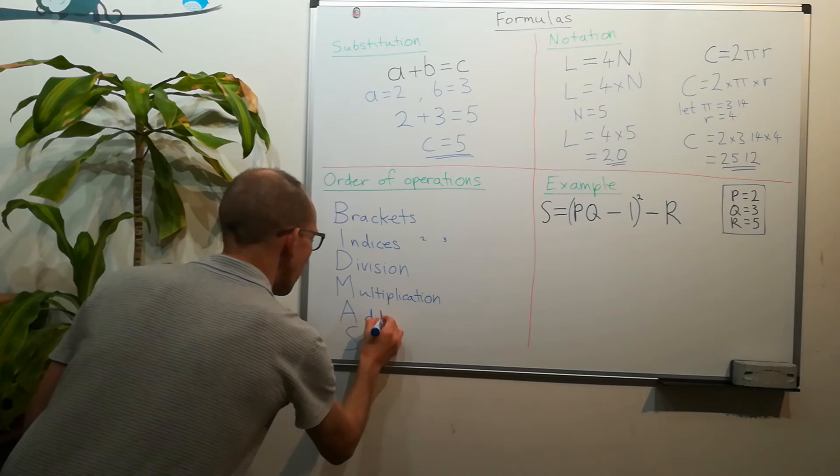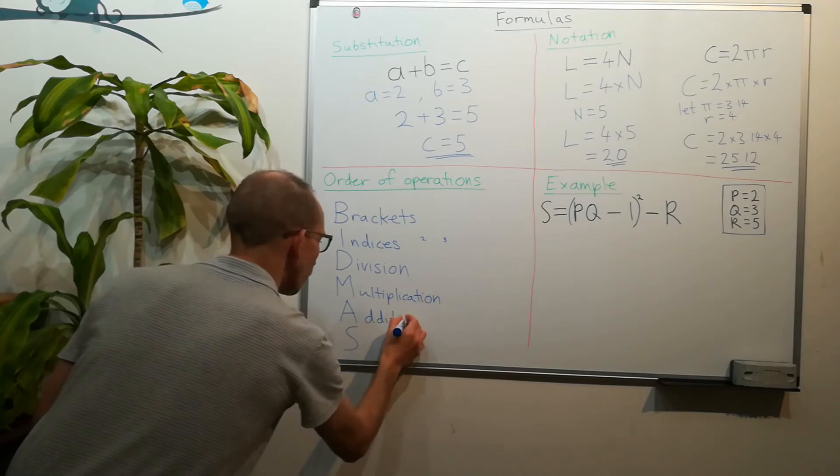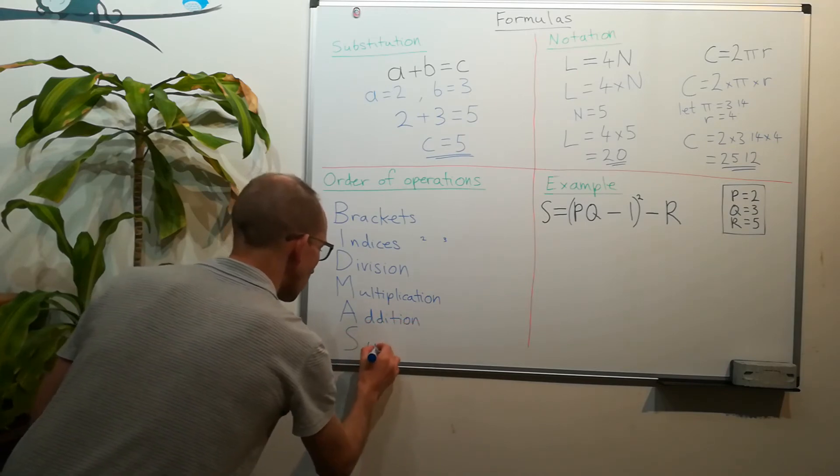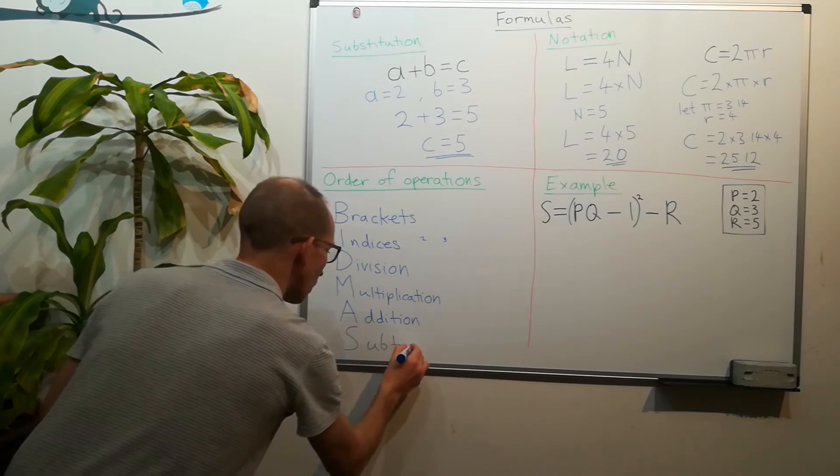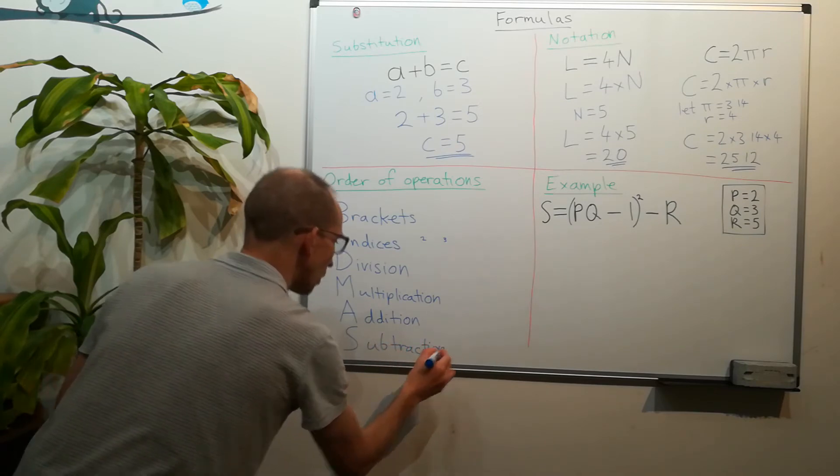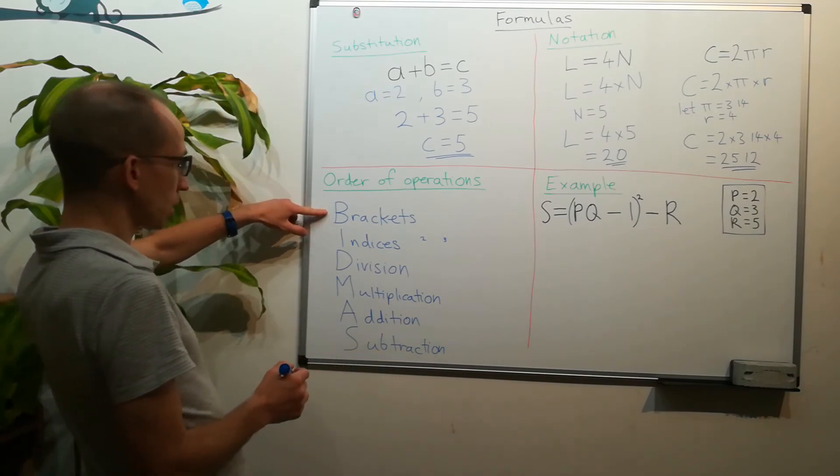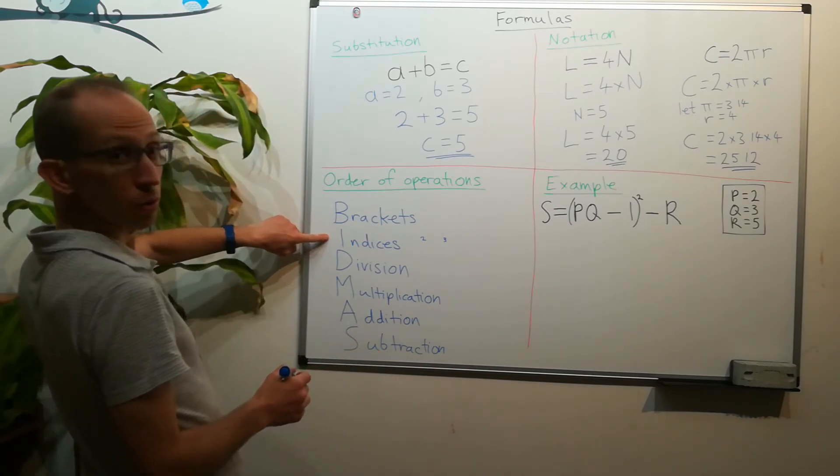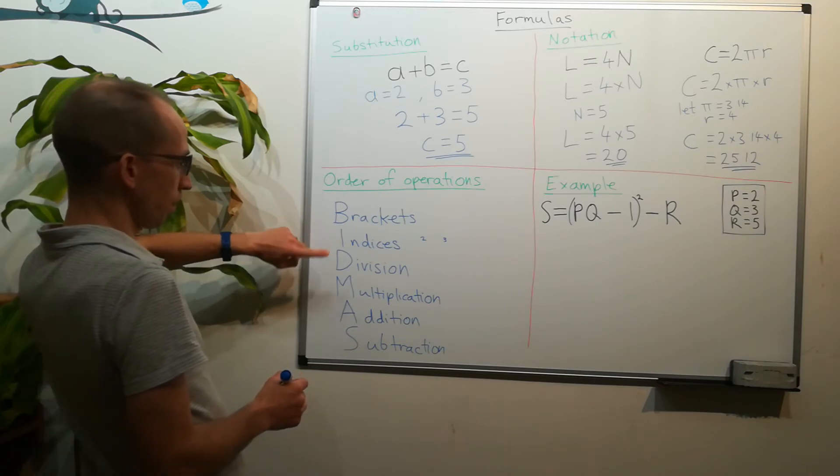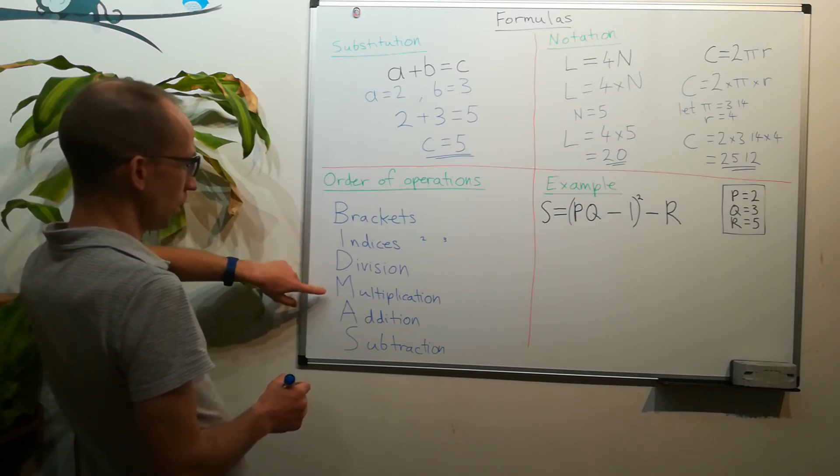A for addition and S for subtraction. So if we've got brackets we do them first, then we do any indices that we have, any division, any multiplication.